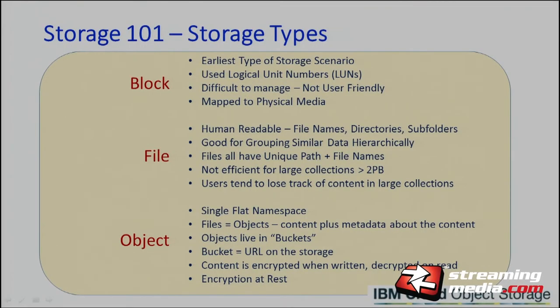If you look at basic storage, we had block storage back in the day — it was great, it was clunky, it worked. File storage — we're all familiar with directories and subdirectories — that's great for human-readable content. But more and more, we're using content management systems and computers to read our content and do analytics. So object storage has come along, which gives you a single flat namespace. Files now become objects stored in buckets — a bucket is a URL in a storage system. Content is encrypted when written and decrypted when pulled back. IBM has mastered that technology.